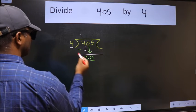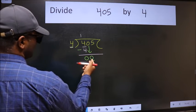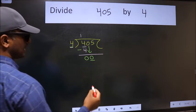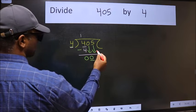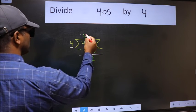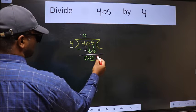Now here we have 0 and here 4. 0 is smaller than 4, so we should bring down the second number. And the rule to bring down the second number is we should put 0 here. Then only we can bring down this number.